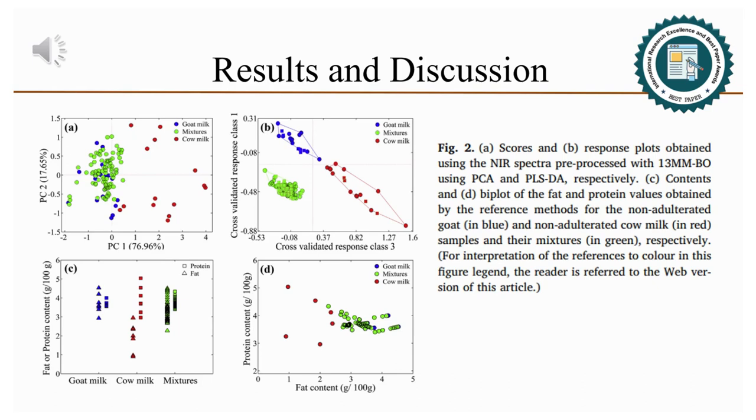However, only PC1 exhibits a trend of separation between both non-adulterated goat in blue and cow in red milk samples, while the adulterated samples in green appear mainly overlapping on goat milk samples. To solve this problem, PLSDA was applied to the NIR spectral data as a supervised pattern recognition technique and proved to be quite efficient to correctly classify all studied samples into three well-defined classes.